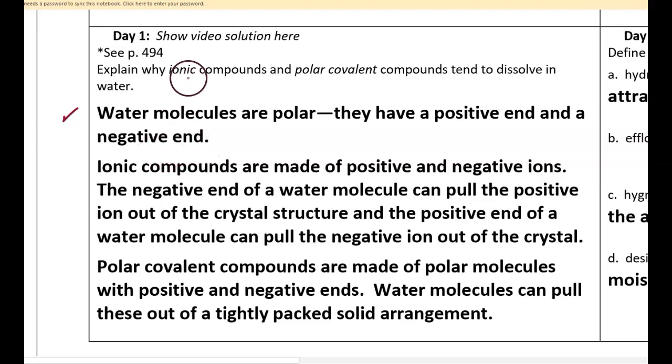Now I'm going to address the ionic compounds piece. Ionic compounds are made of positive and negative ions. The negative end of the polar water molecule can pull the positive ion out of the crystal structure.